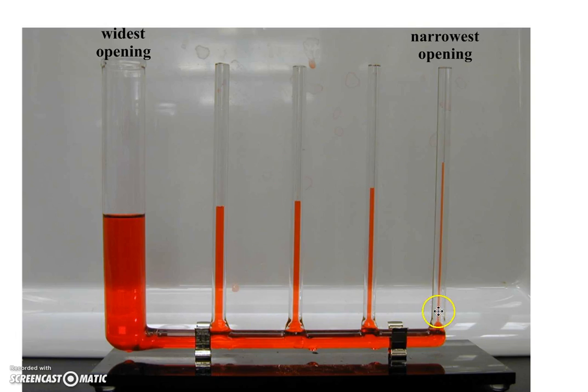You'll notice that in the skinniest tube, the red liquid got pulled up the highest. And as the tubes get wider, the level of the water goes down and down and there it's the lowest. So this just shows you that the smaller the openings or the smaller the pores, the higher up the water will go.